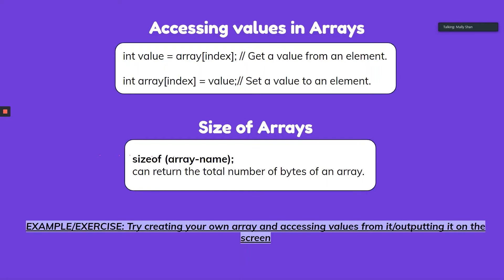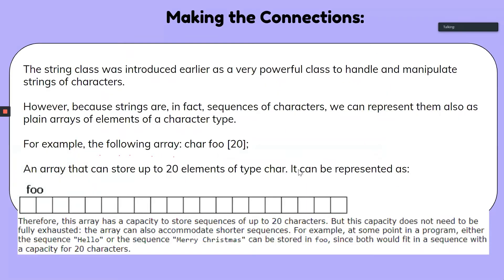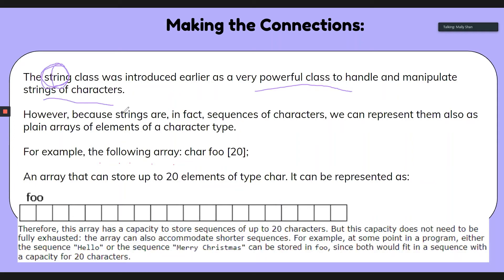You can also look at the size of your array using the sizeof function, which returns the total number of bytes of an array — how much memory is being stored. Connecting this to strings: the string class is a very powerful class that handles and manipulates sequences of characters, but because strings are in fact a sequence of characters, we can represent them as an array as well — an array of element type char. That's why in the previous slide we talked about indices; it's the same as using string.at() to get data at a specific position.